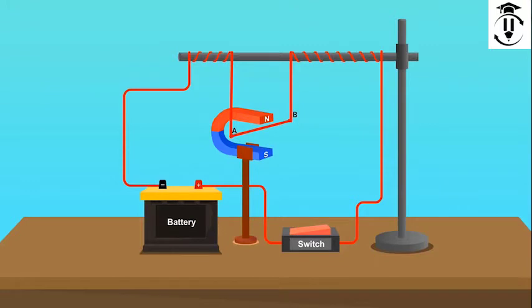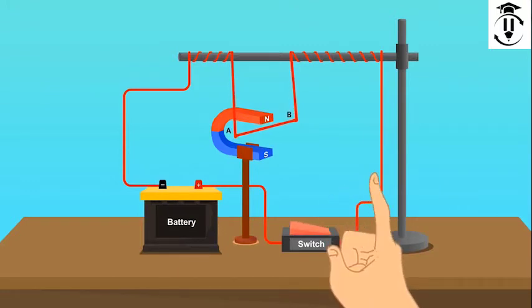Turn on the switch after completing the circuit. We can see the deflection in the wire in one direction. The deflection can be seen as long as the switch is on. How is this even possible?